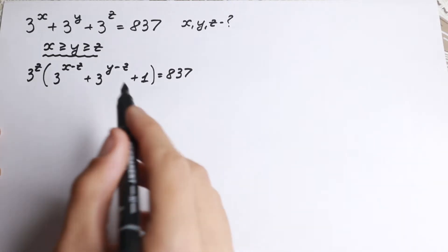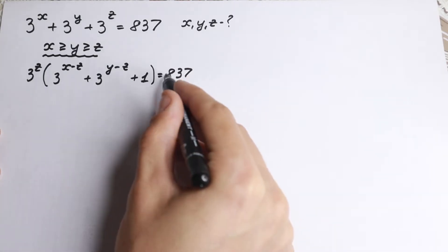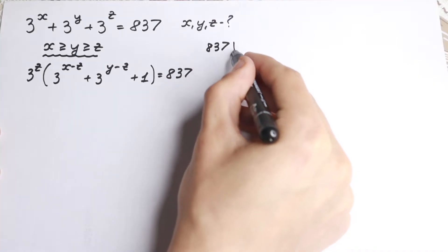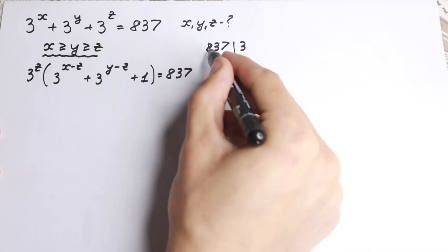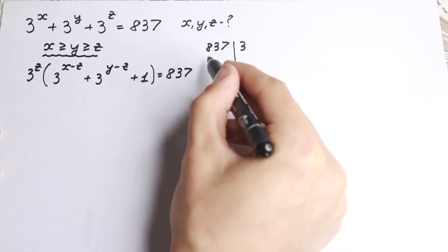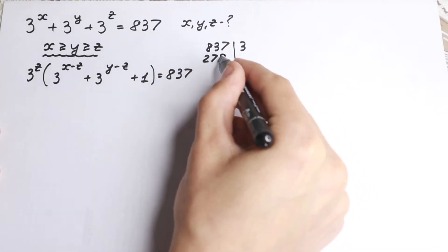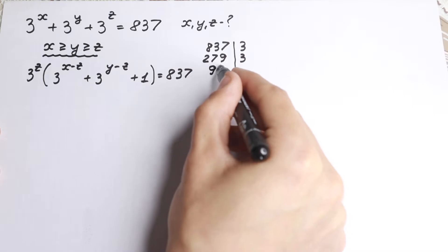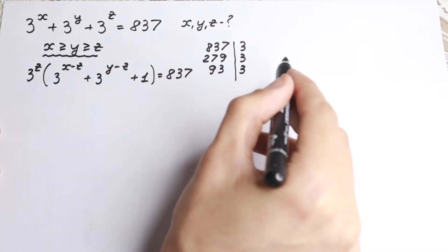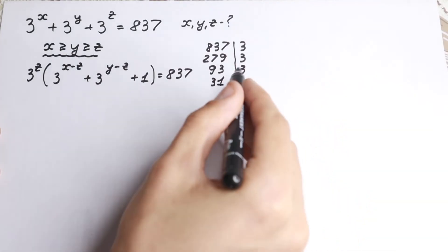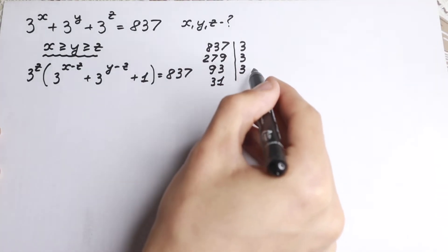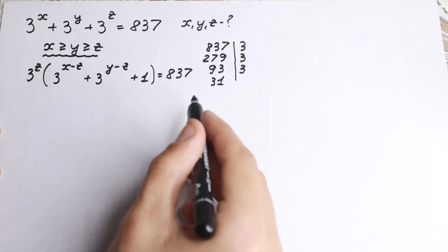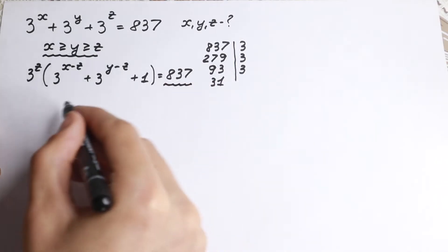Now let's think about 837. If we divide it by 3 — we can do this because the digit sum is 18 — we get 279. Then 279 divided by 3 gives 93. And 93 divided by 3 gives 31, which cannot be divided by 3. So we can write 837 as 3 cubed times 31.